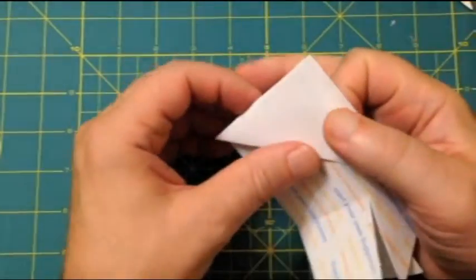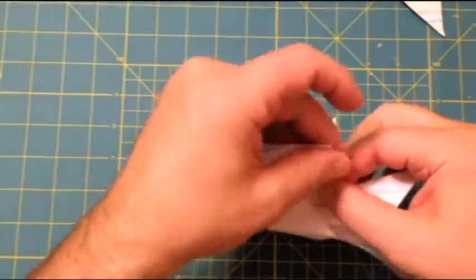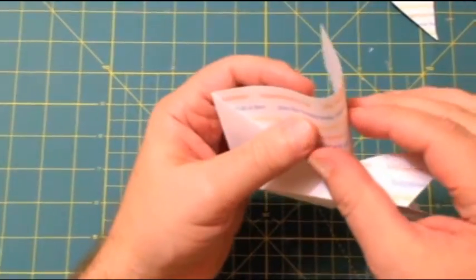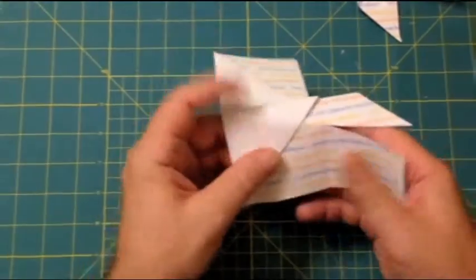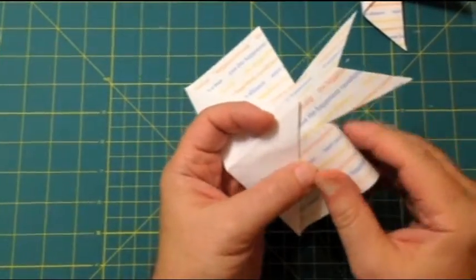Now we open this back up and crease this. And turn it back over. Invert the fold. Do the same thing on the other side. Crease it. Invert the fold.